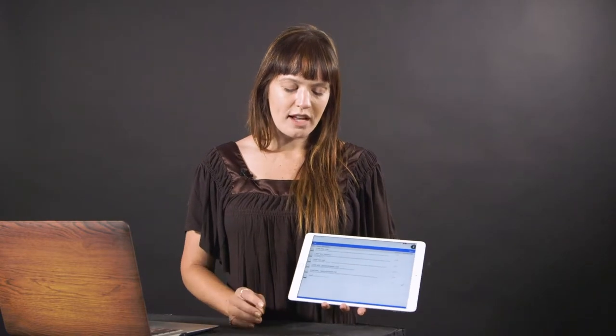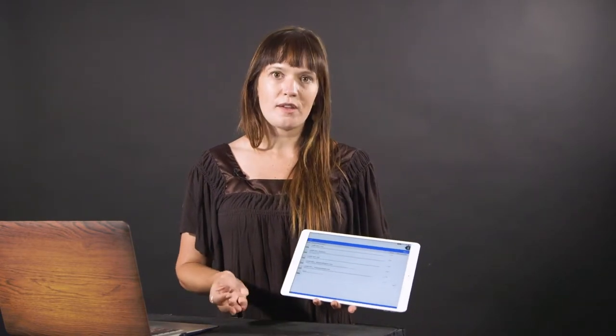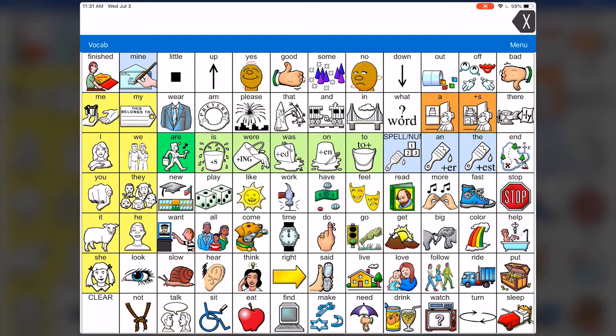We're going to first take a look at the LAMP Words for Life one hit as this would be where you would start typically with a user. So the LAMP Words for Life one hit is set up exactly like the transition and the full. So as the user moves through the different levels, their motor plan remains consistent in the way that they access the language. However, everything is available in only one hit. There are no sub pages that the user is going to be drawn to. While this does limit the language available, you only have access to these 84 buttons on the screen. It's a great way to train initial use of the system and provide some immediate feedback. So one hit, the message is spoken or populates the message window immediately.